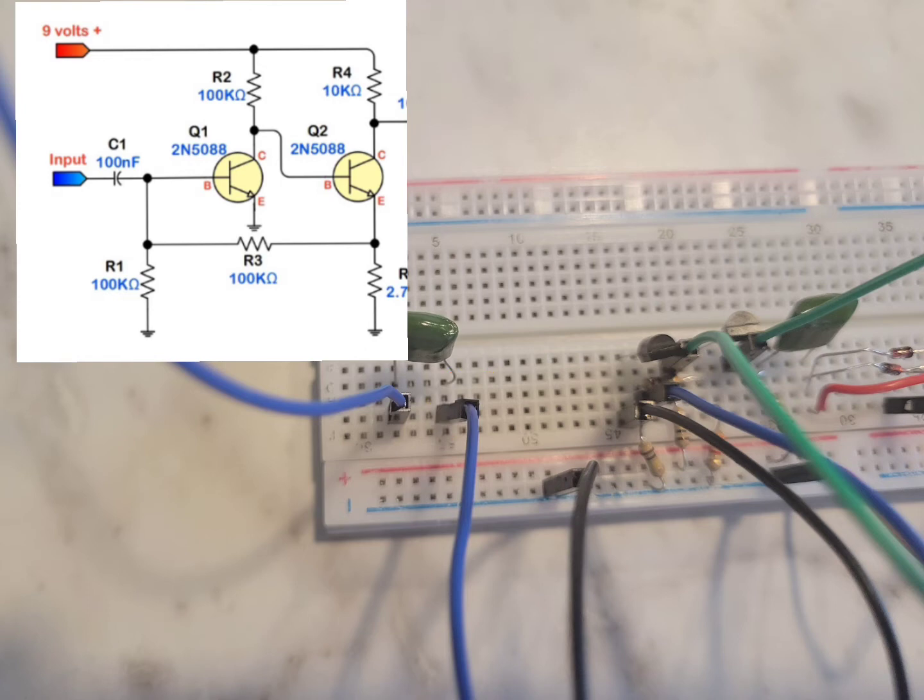Alright, and our last jumper in this section is the green jumper. Which is going from the collector, the C of the first transistor. Connecting to a 100K. Then going in to the base of the second transistor. And this is our last connection of this section.